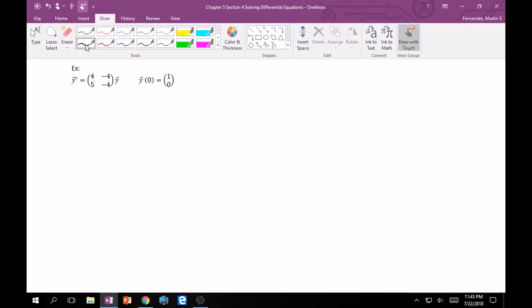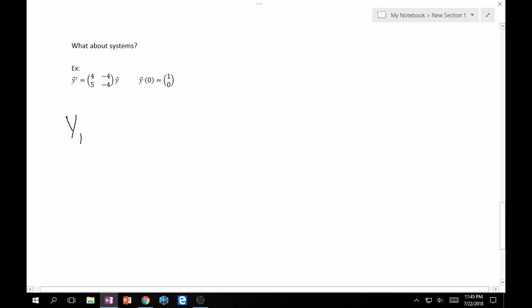Let's expand this. What this really means is that y1 prime is equal to, based on this system, it's equal to 4y1 minus 4y2. Similarly, y2 prime is equal to 5y1 minus 4y2. And then, if we want to translate the initial condition as well, y1 of 0 is equal to 1 and y2 of 0 is equal to 0.